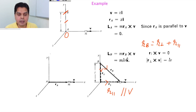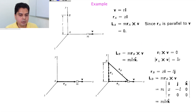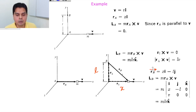We can verify using the determinant method: r_B = xî − lĵ, v = vî. Writing the determinant with î, ĵ, k̂ in the first row, (x, −l, 0) in the second row, and (v, 0, 0) in the third row gives L_B = mlv k̂. Both the decomposition method and the determinant method yield the same answer.